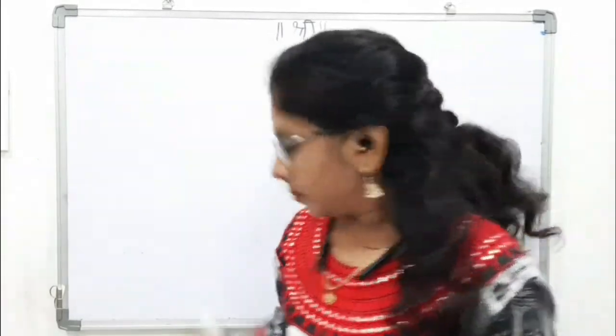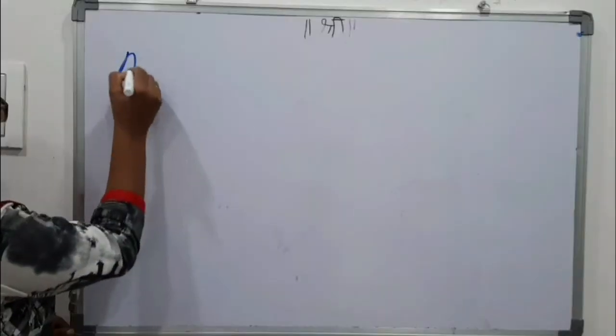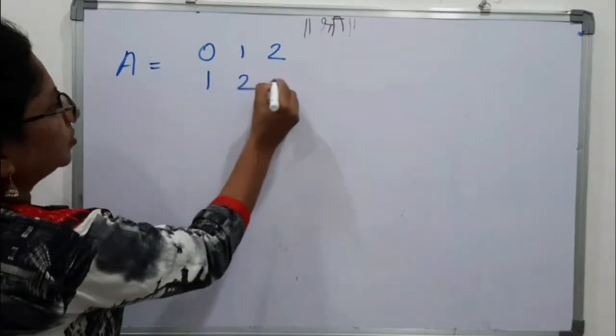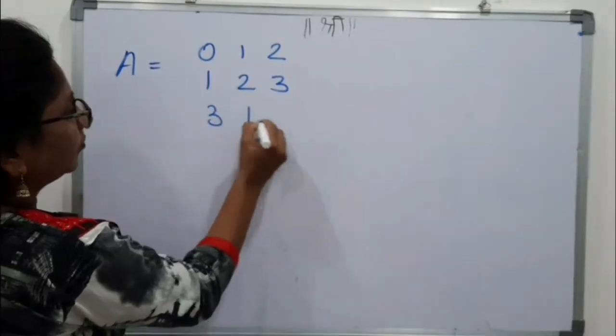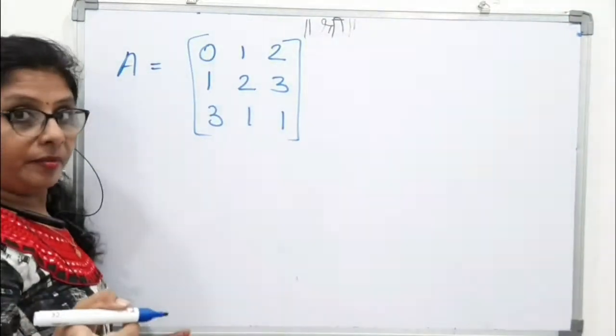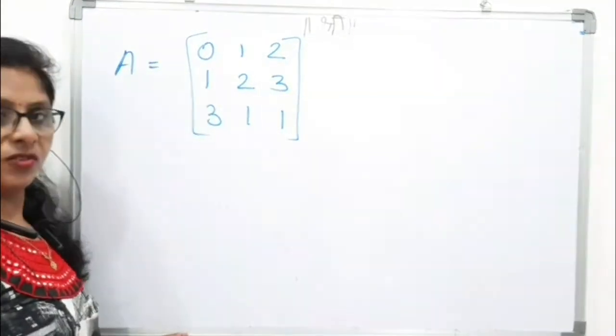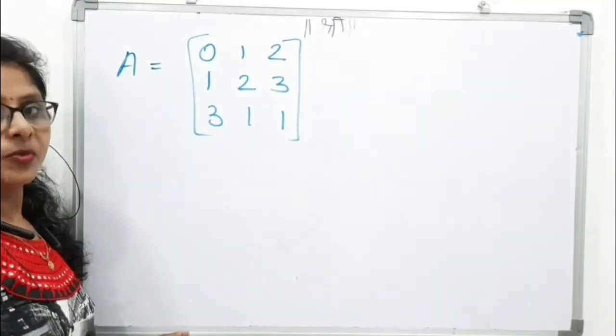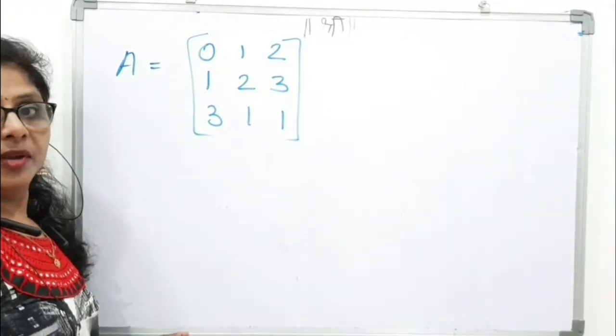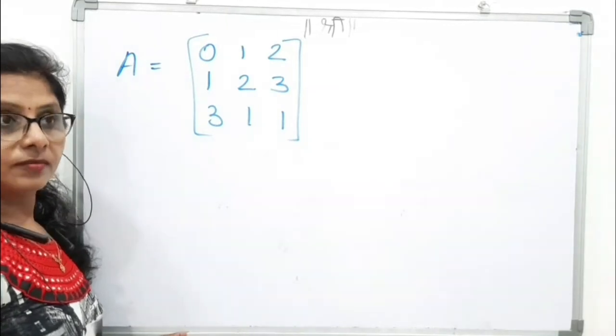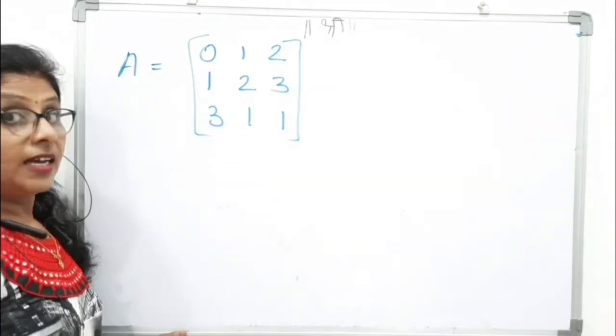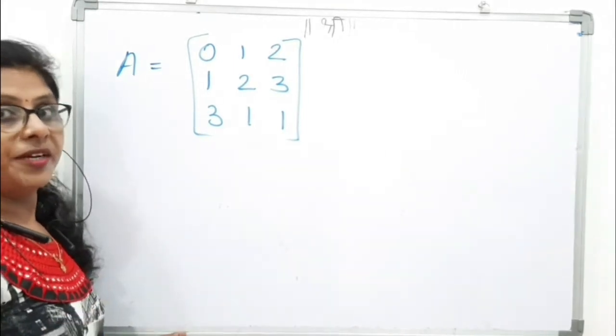Now for 3 by 3, suppose the matrix is A equals [0, 1, 2; 1, 2, 3; 3, 1, 1]. If you remember we have found the inverse of this matrix also using elementary transformations. If you don't remember then go in my previous videos. You will find there.